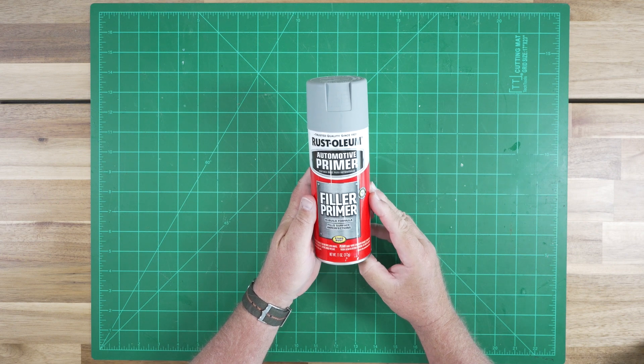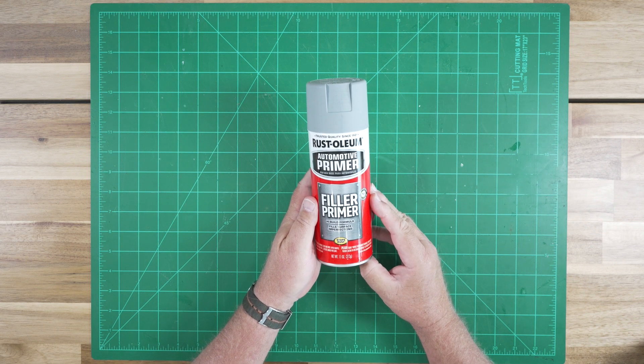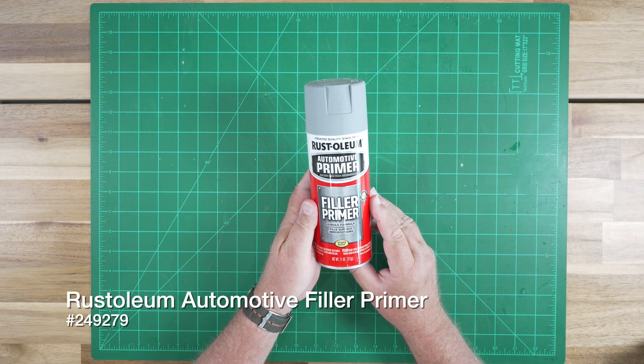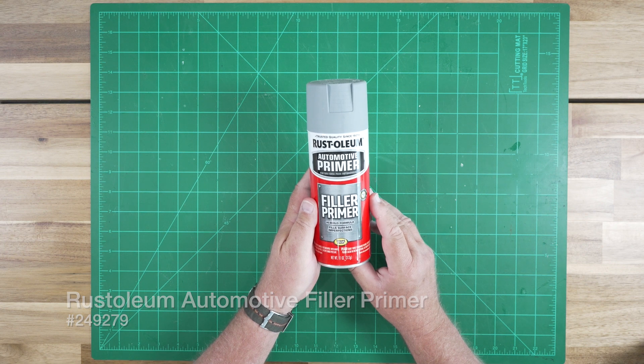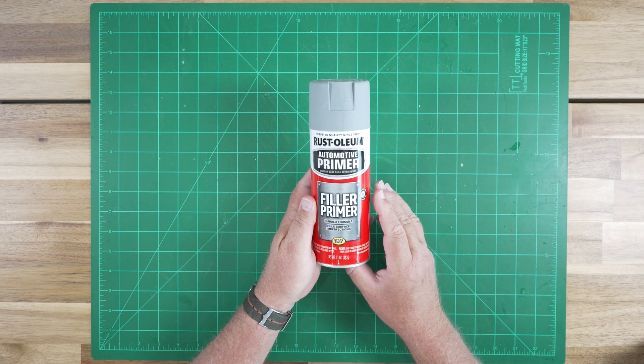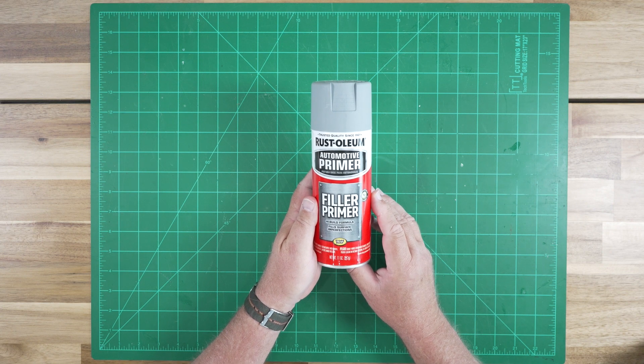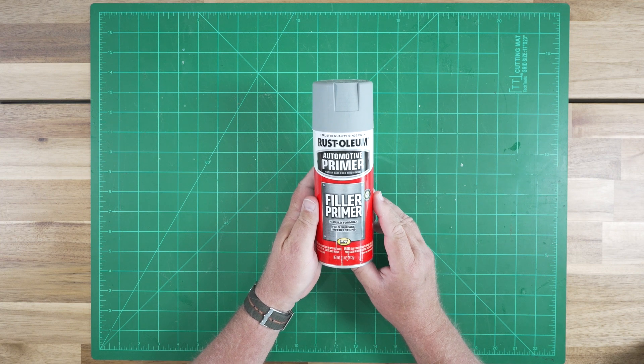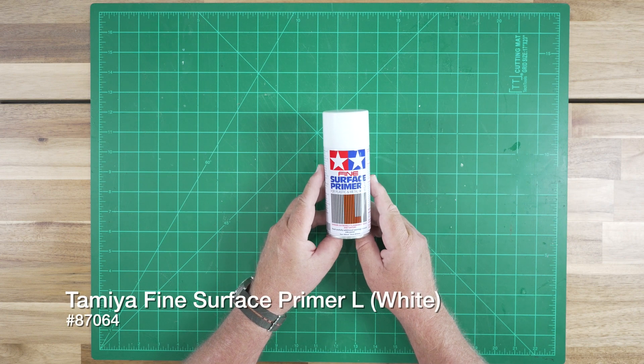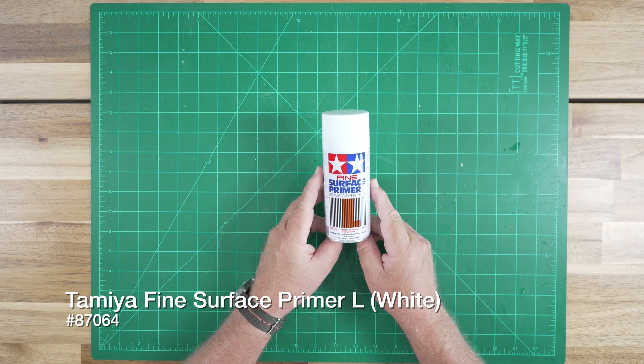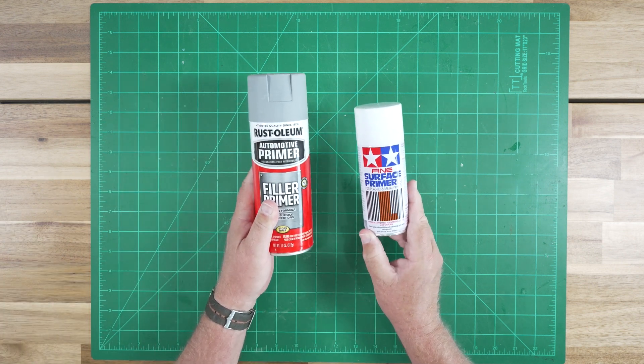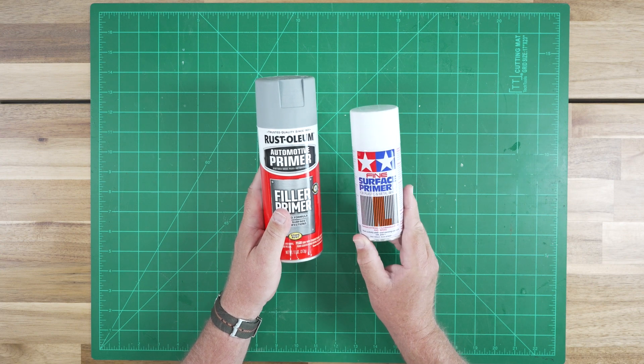Let's talk about primers because we'll be using a couple of different types on this project. The first we'll be using is a high solids filler primer, and we'll be spraying that onto the exposed paper tubes. The reason we do that is we want to fill the spiral grooves that are an artifact of the tube manufacturing process. The other primer we'll be using is a low solids primer that's intended to be a base for the painted surfaces. Both of the primers serve different purposes and they'll be used at the appropriate points.